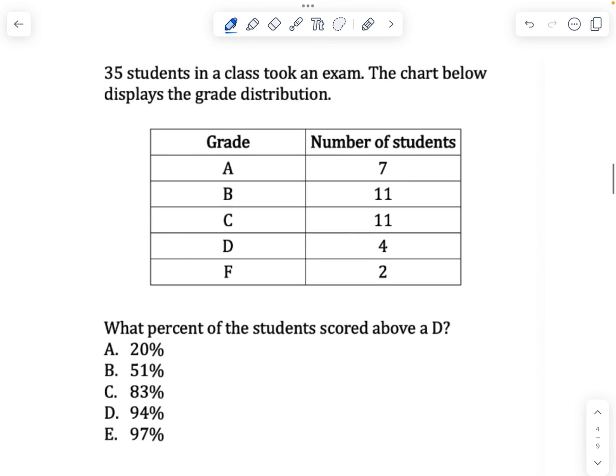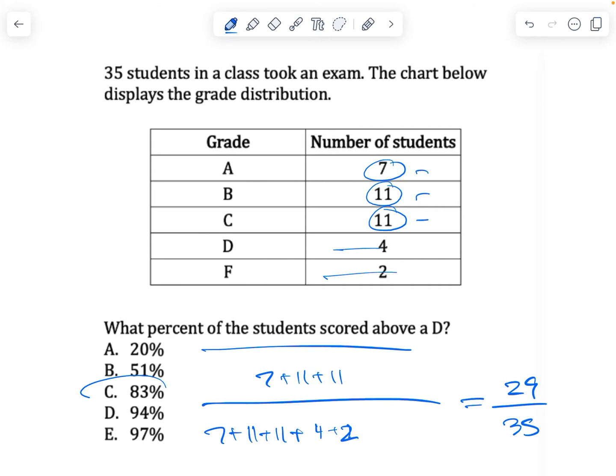Frequency charts. 35 students in a class took an exam. The chart below displays the grade distribution. What percent of the students scored above a D? Above a D would be if you got a C, B, or A. We're going to add that number together: 7 plus 11 plus 11. In order to find a percent, we want to find what proportion of students out of the entire set got fit in these categories. So the entire set is going to be those students plus the people that got D's and F's, 4 plus 2. Now you just do this on your calculator. You get in the numerator 29 divided by 35 in the denominator. That gives you about C.